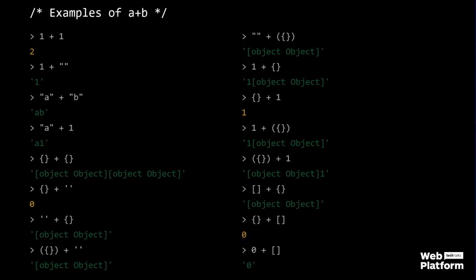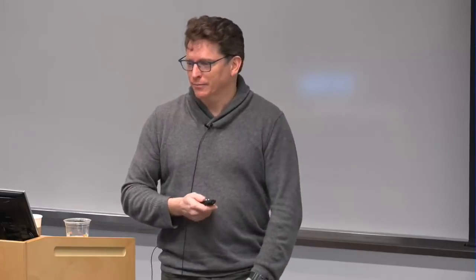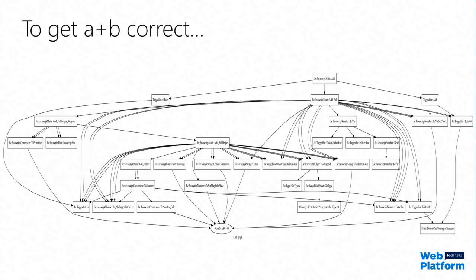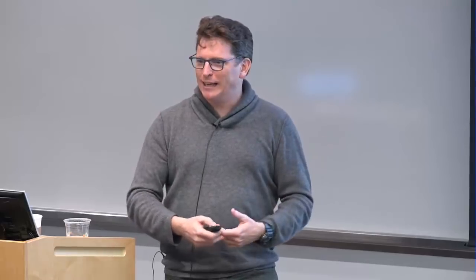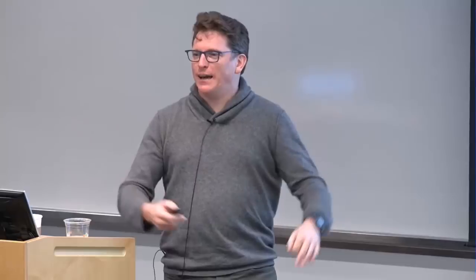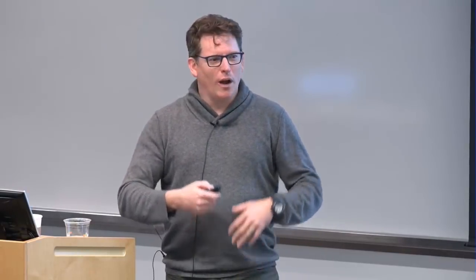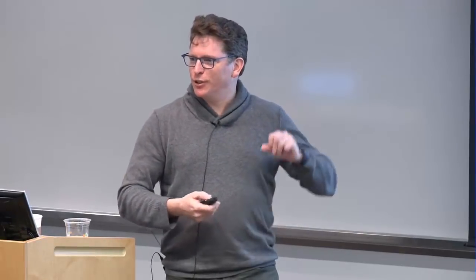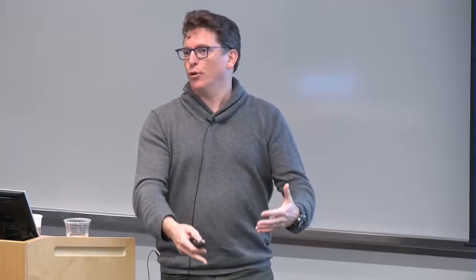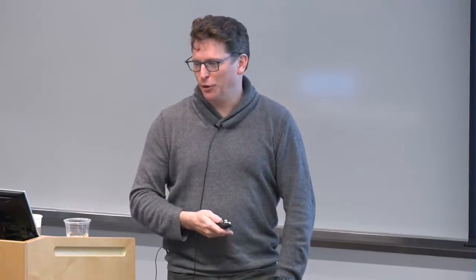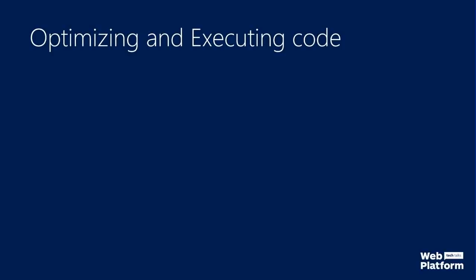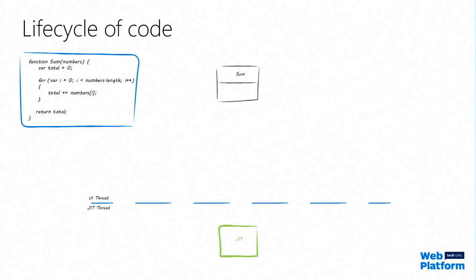In fact, this is the call graph of all the code that can get triggered by doing a plus in JavaScript inside the runtime. When the interpreter has A plus B, these are the different paths that might be taken through the engine. So how can we generate code for something like this? We can't generate all of this whenever we have an add operation in the code.